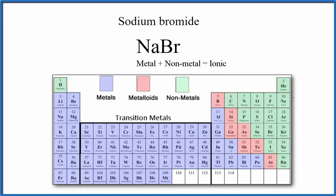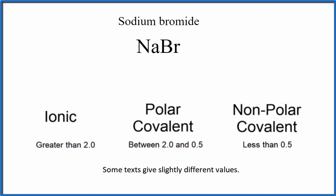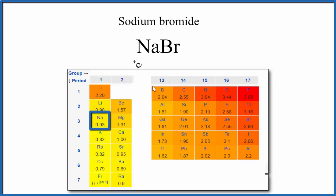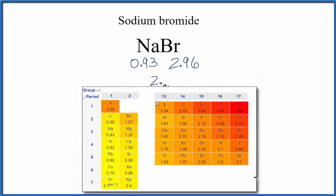The other way is to look at the differences in the electronegativities of each of these elements. If we have a difference greater than 2, that's going to be ionic. Let's take a look at the periodic table here with electronegativity differences. Sodium has an electronegativity value of 0.93. Bromine has an electronegativity value of 2.96. If we look at the difference between these two numbers, it's 2.03.